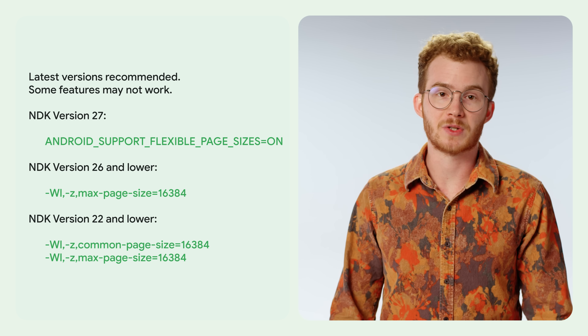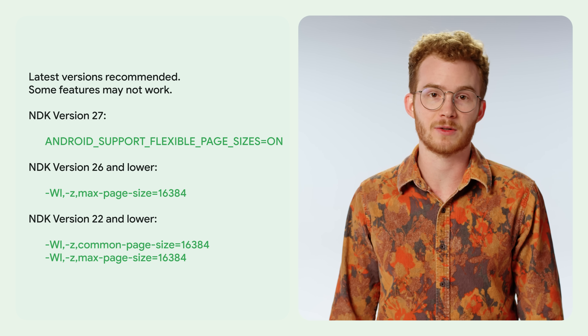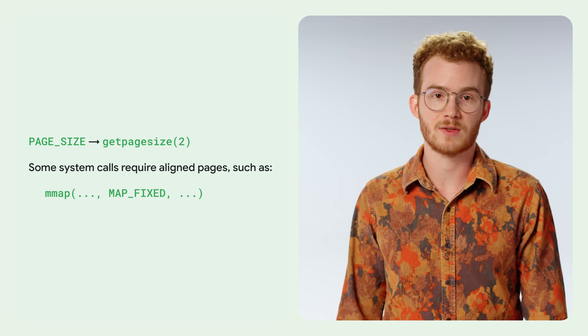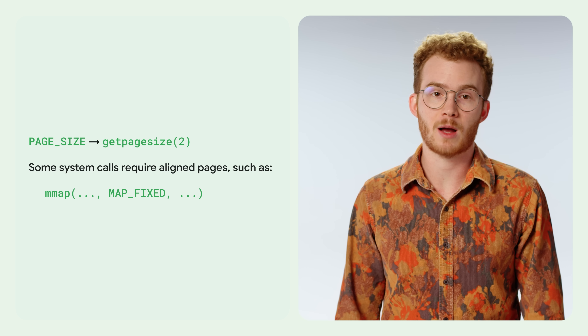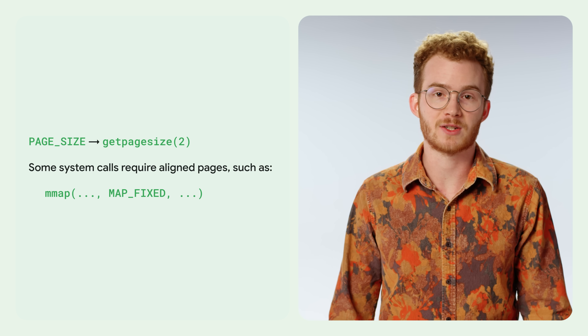If you aren't on the latest tools yet, you can compile with the max-page-size 16KB option to tell the linker to align your executables. Low-level code may also directly manipulate page size. If you have code which deals with mmap, especially with a MAP_FIXED option or similar operations, you may need to update it to use a get_page_size function instead. Luckily, anything which is a multiple of 16KB pages is also a multiple of 4KB pages, so whenever you get your application to work on 16KB pages, the same binary will also work on all existing devices.